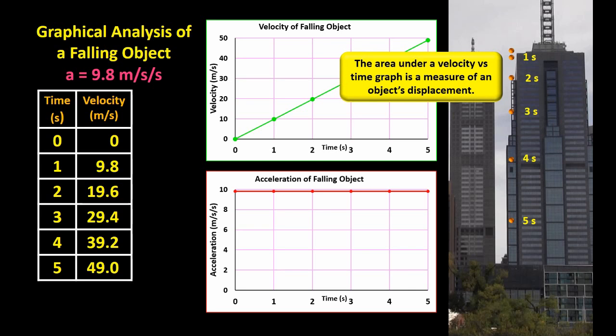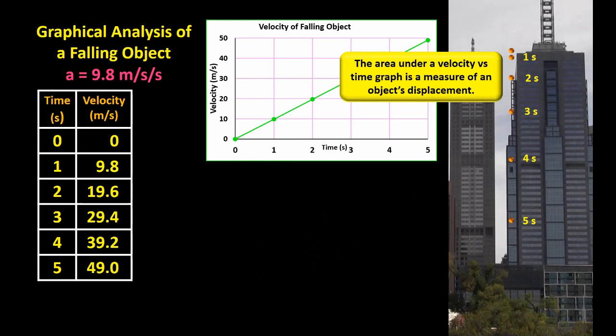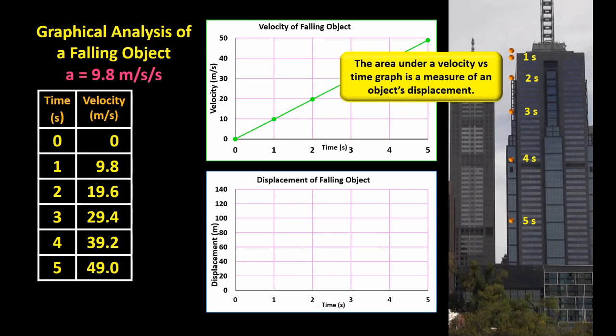Now we saw in our last episode that the area under a velocity versus time graph is a measure of an object's displacement. So we can use this Vt graph to calculate the falling ball's displacement after one second, two seconds, and so on. And then graph the results. Let me get rid of the At graph first and put in a displacement versus time graph.